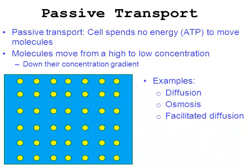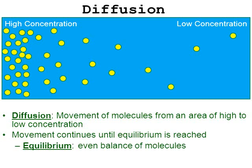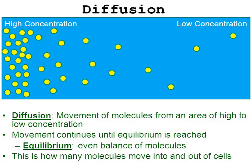Examples of passive transport — which is what the rest of this video will discuss — are diffusion, osmosis, and facilitated diffusion. Let's go into diffusion first. Diffusion is the movement of molecules from an area of high to low concentration. As we said, it's an example of passive transport, so no energy is required. The movement of these molecules continues until there's an equilibrium — a state of balance. In the picture, yellow dots are clumped and concentrated on the left, while fewer dots appear on the right. Molecules spread out and move until there's a balance. This is diffusion, and it's really how molecules move into and out of most cells.